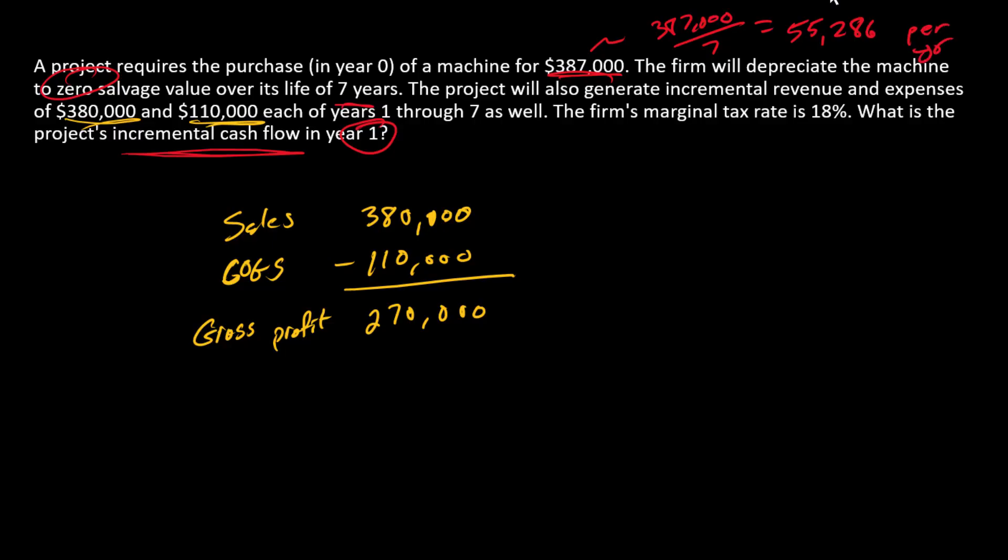And so we'll go ahead and subtract that depreciation here. We're going to subtract $55,286. And what do we have after that? We have $214,714.